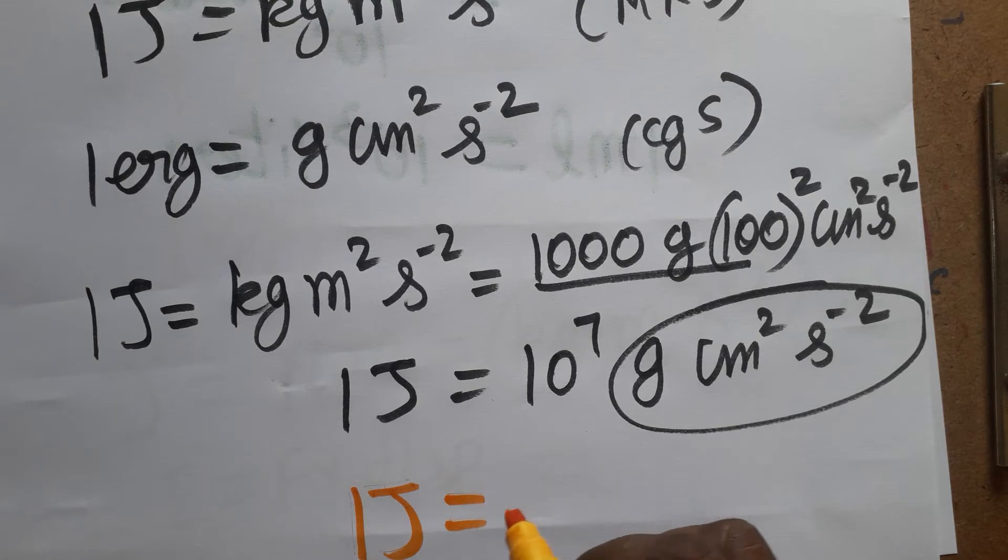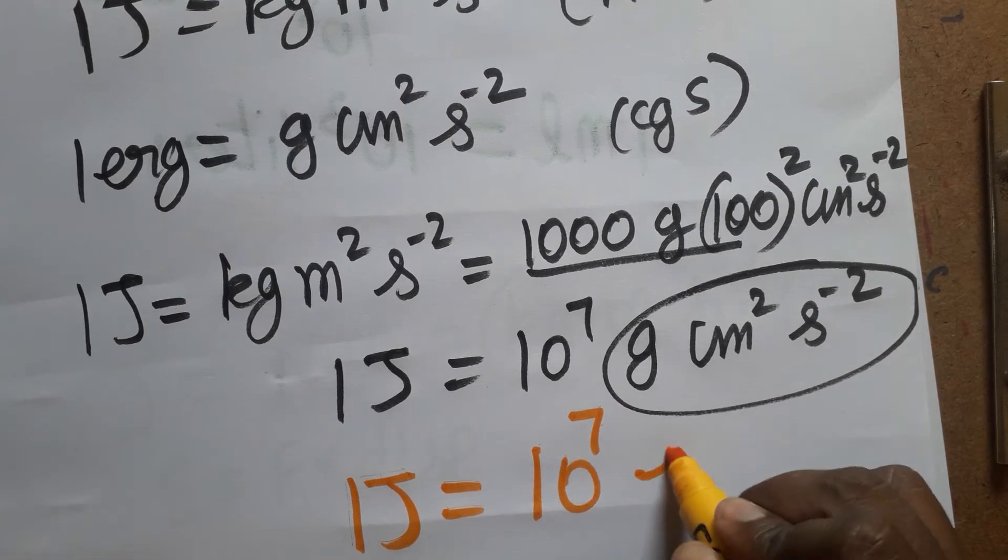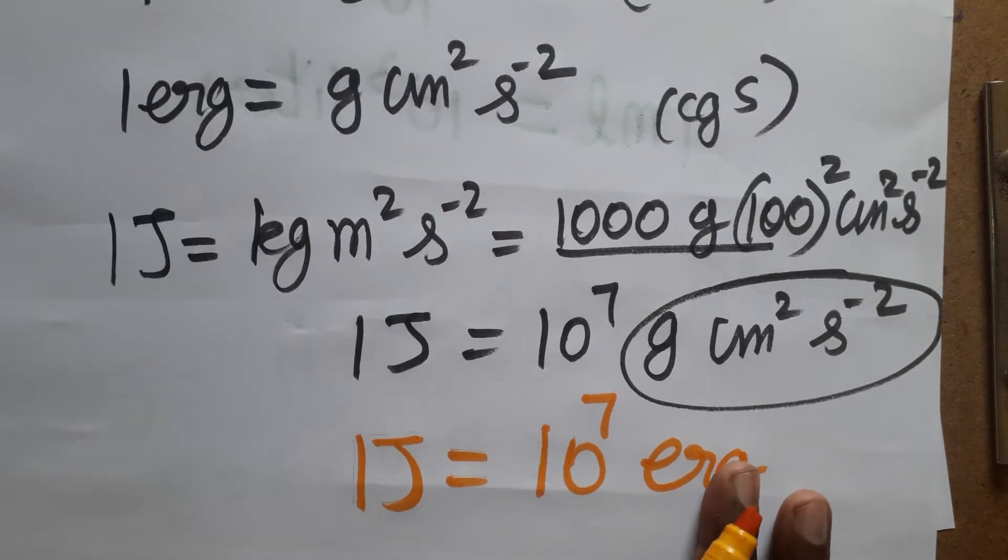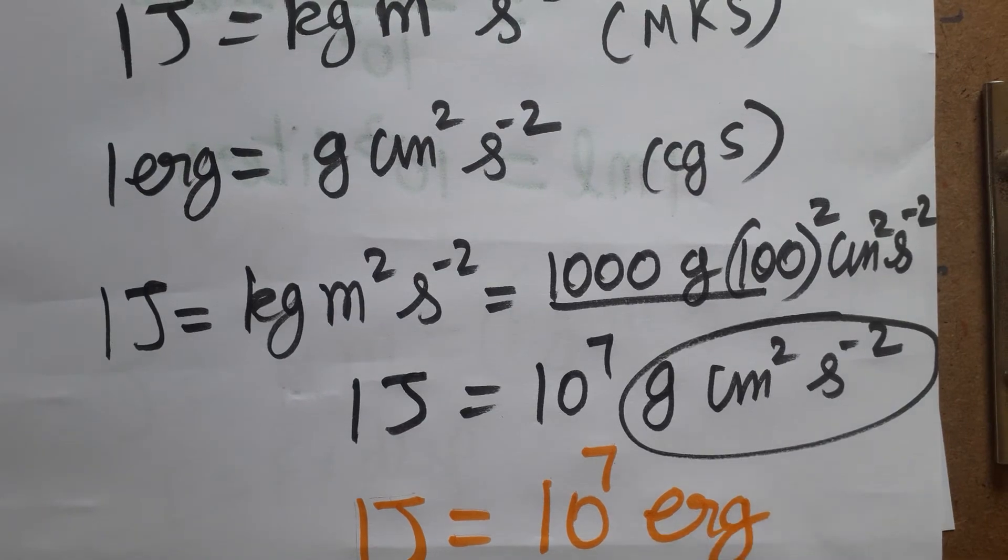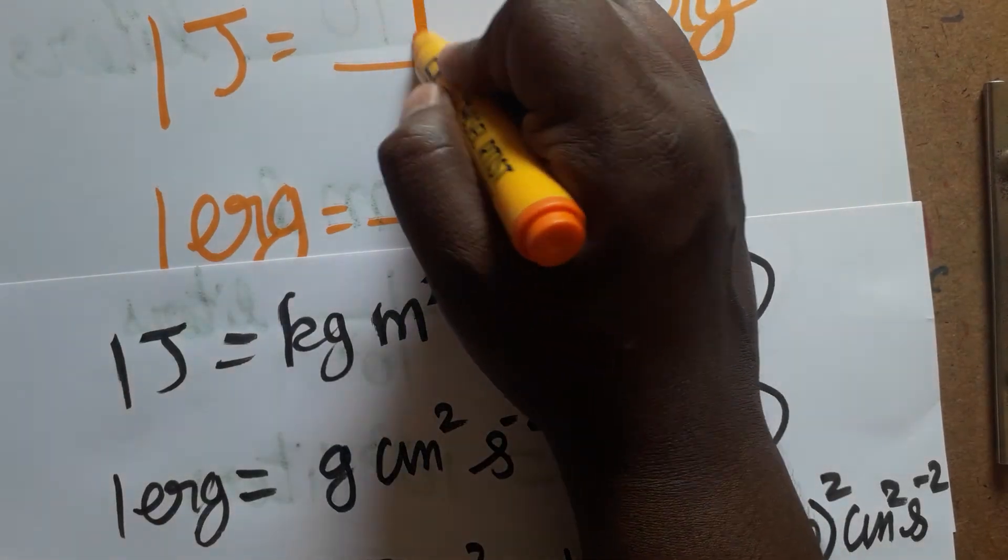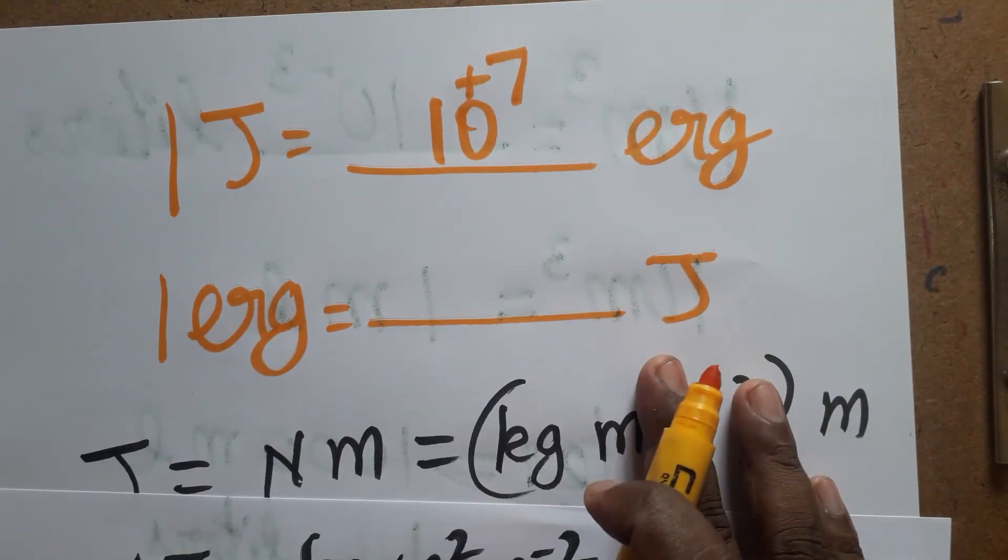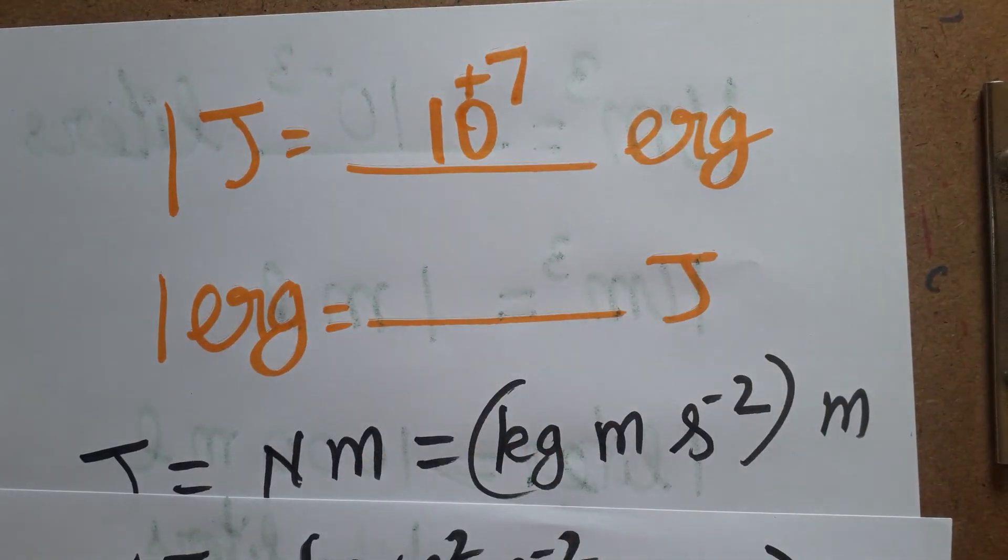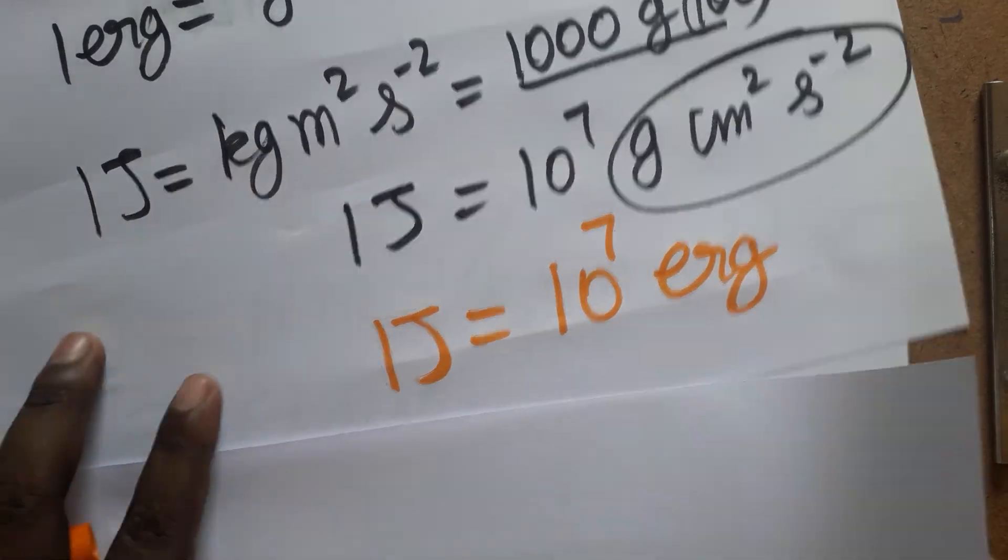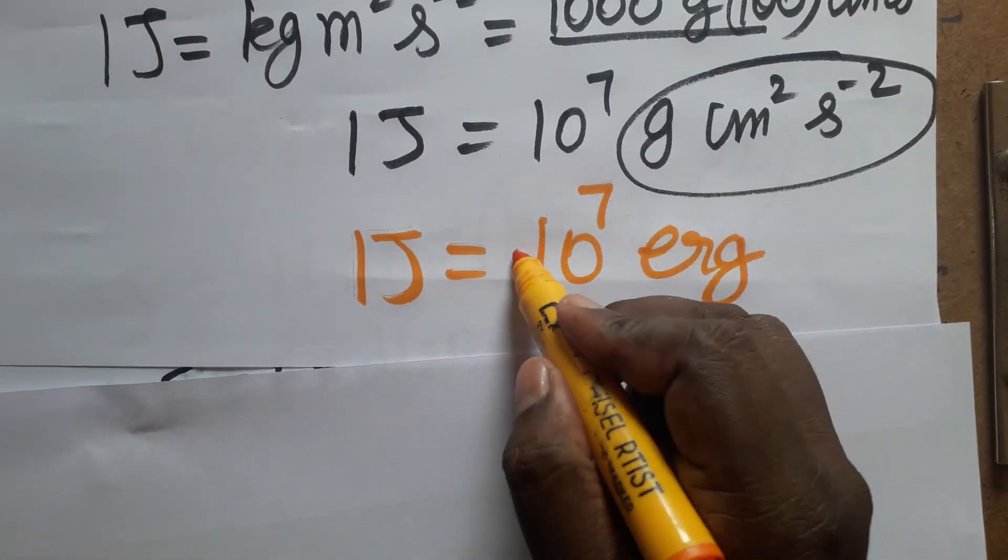Now opposite conversion. 1 erg is equal to dash Joule. 1 Joule is 10 to the power 7 erg. 1 erg is equal to dash Joules. This 10 to the power 7 I am bringing as a denominator here, cross multiplication.